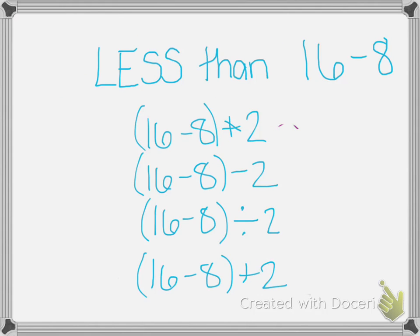Number 3 says which expressions are less than 16 minus 8. Circle all that apply. So we have 16 minus 8 in all of them. The first one has multiplied by 2. We know if we multiply, our answer gets bigger. So that's not correct.